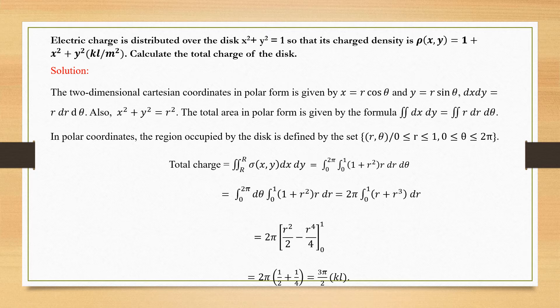Substituting the lower limit gives 0. Taking the LCM as 4 gives 2 + 1 = 3, so the result is 3/4. With 4 cancelled by 2, the final answer is 3π/2 k. This is the total charge of the disc. We had converted a Cartesian problem into polar form using this substitution relation.